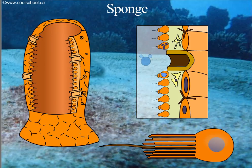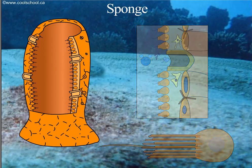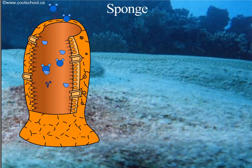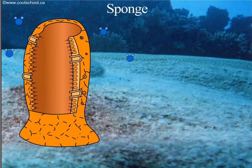Waste and carbon dioxide will enter the central cavity through the collar cells. From here, water, waste, and carbon dioxide leave through the excurrent pore called the osculum.